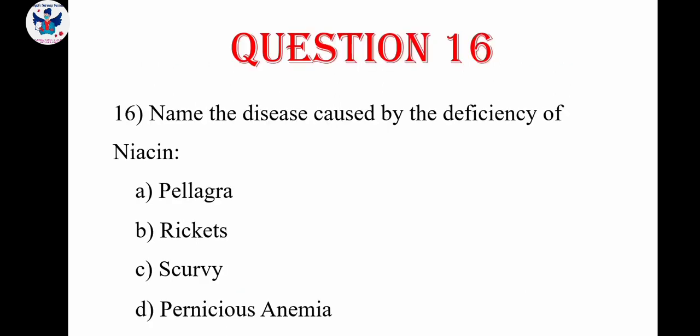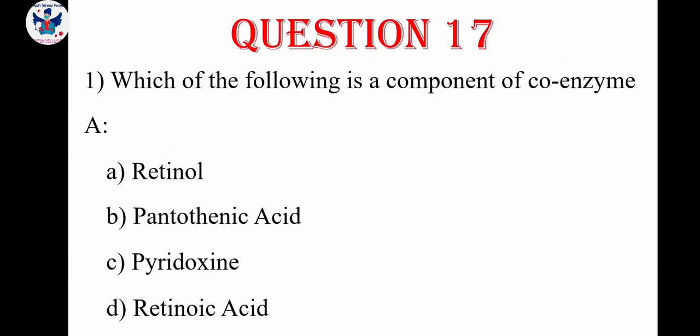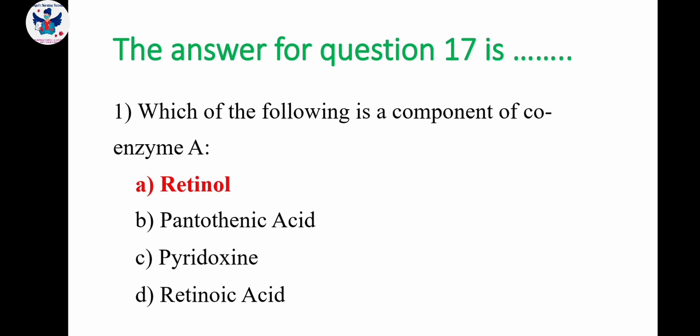Next: name the disease caused by the deficiency of niacin — options are pellagra, rickets, scurvy, pernicious anemia. The correct answer is pellagra. Next: which of the following is a component of coenzyme A — retinol, pantothenic acid, pyridoxin, retinoic acid. The correct answer is retinol.